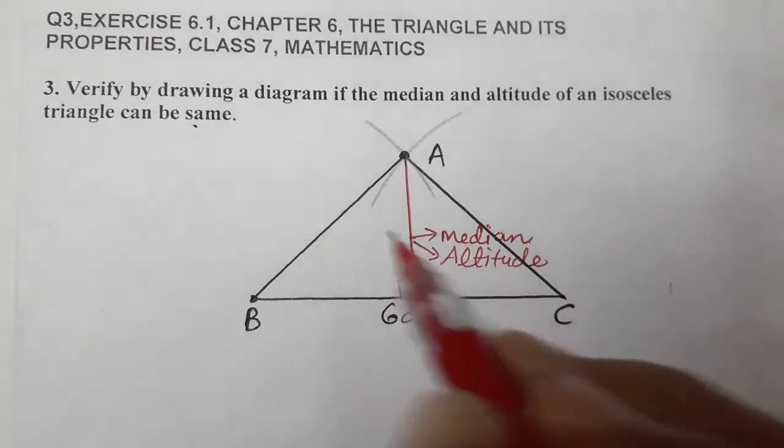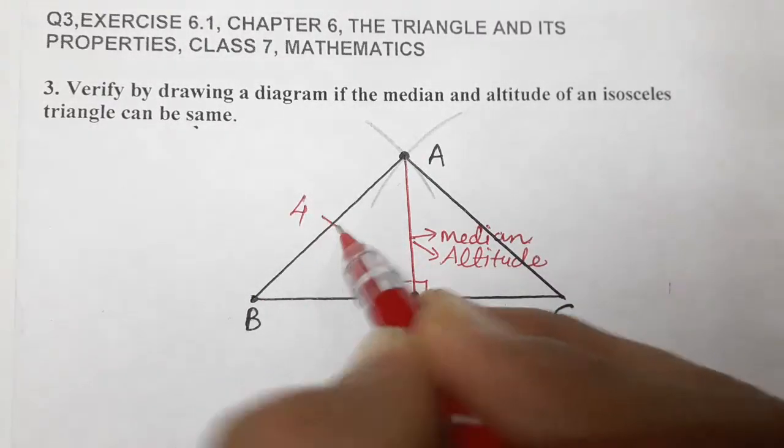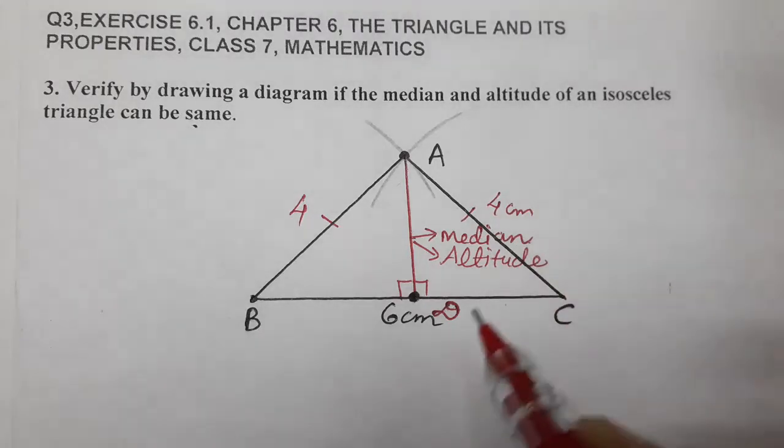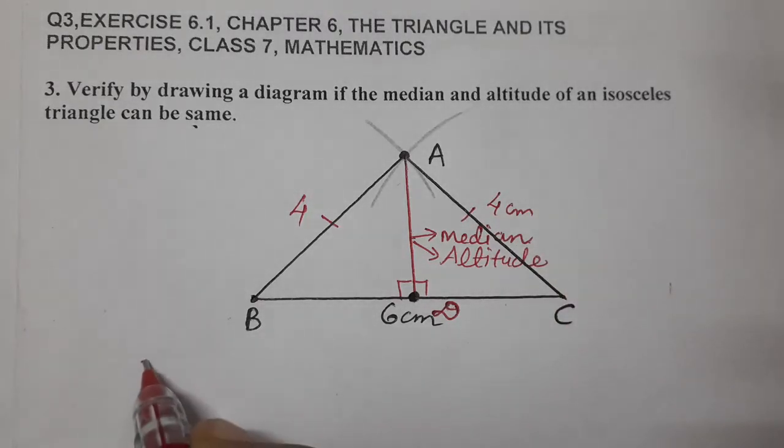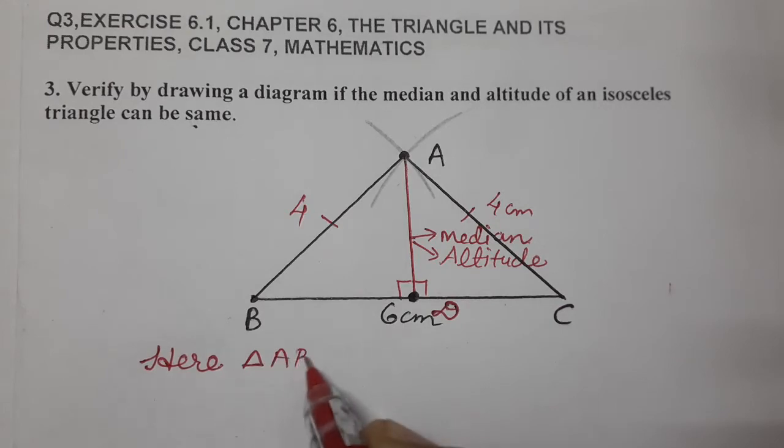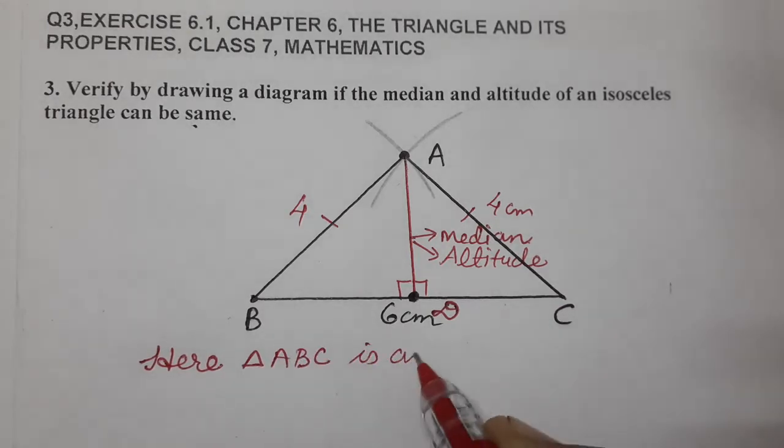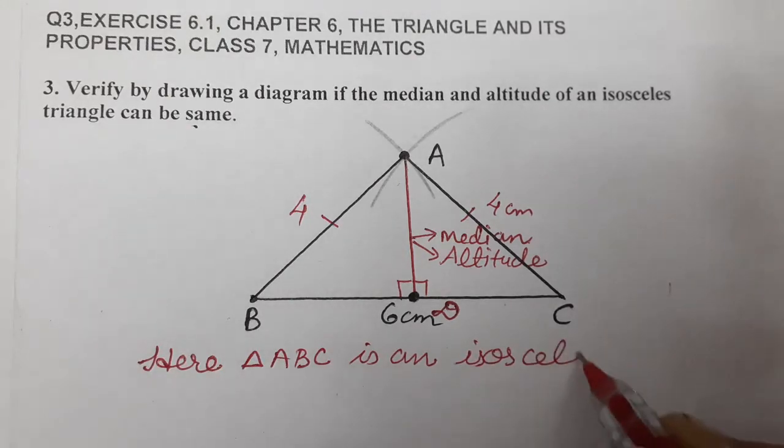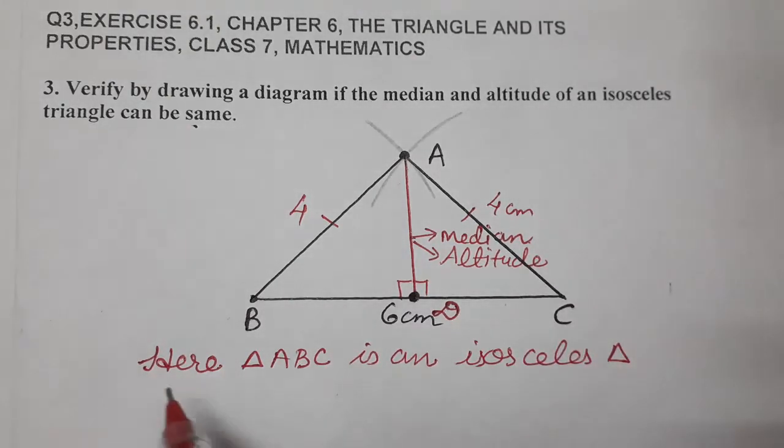This is an isosceles triangle. This is 4 centimeters length, this is also 4 centimeters length. This is an isosceles triangle. So we can write here: triangle ABC is an isosceles triangle.